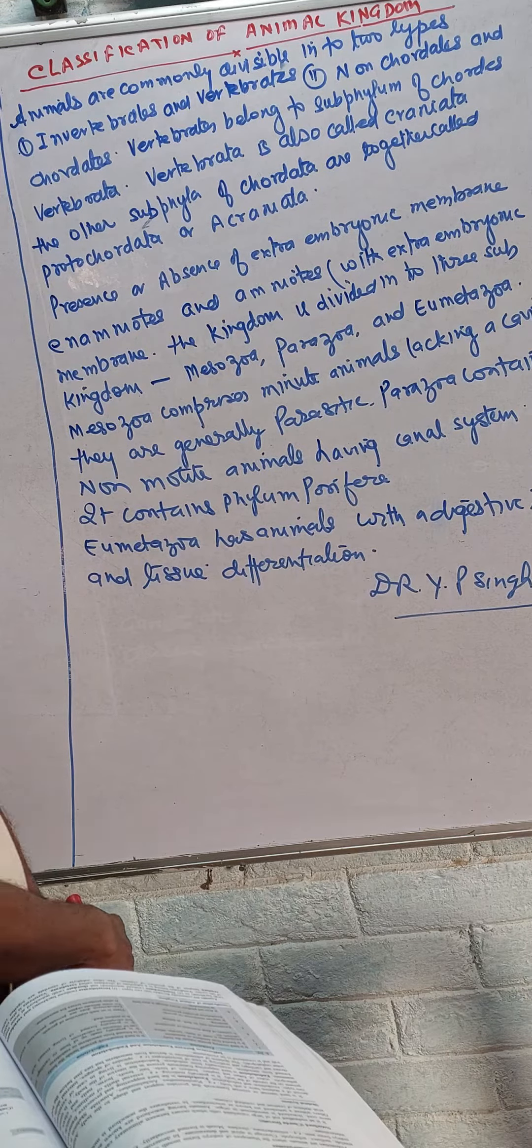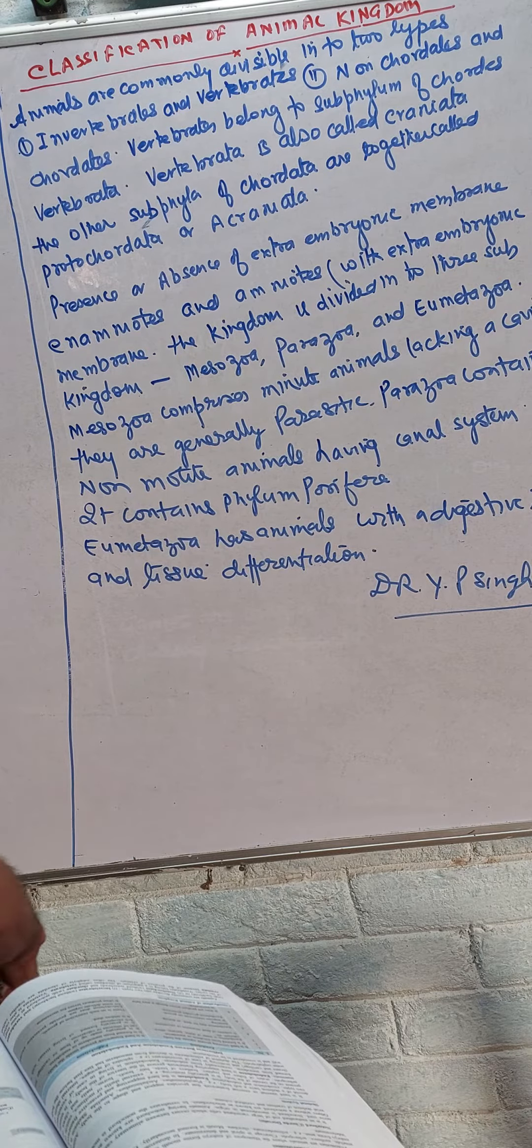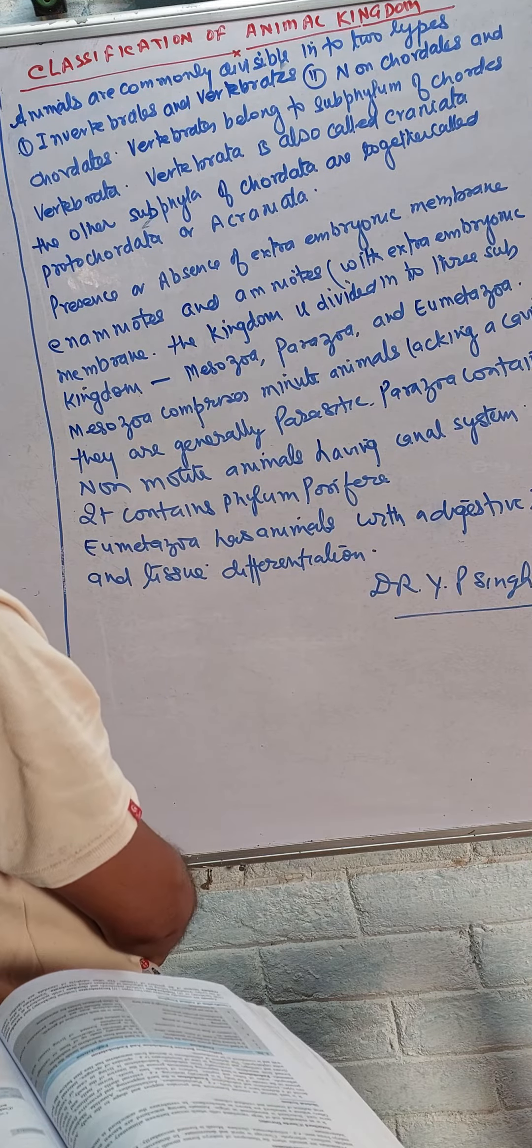The kingdom is divided into three sub-kingdoms: Phylum Mesozoa, Parazoa, and Eumetazoa.